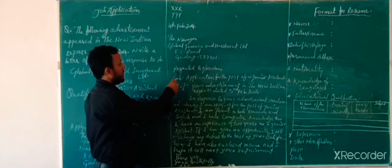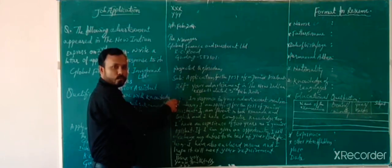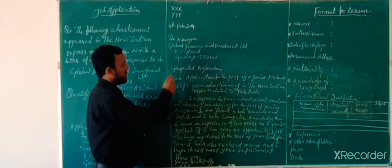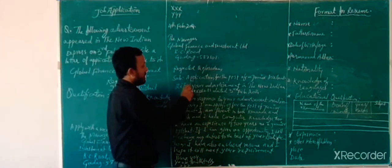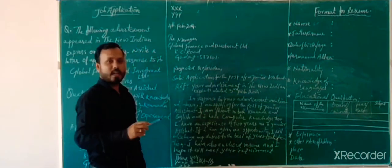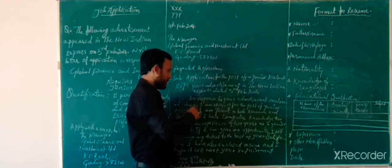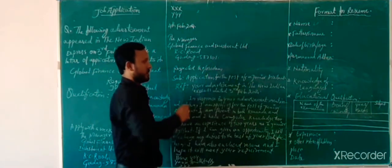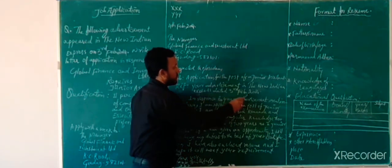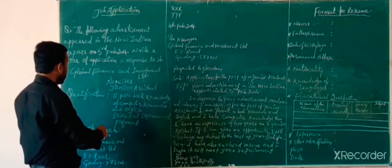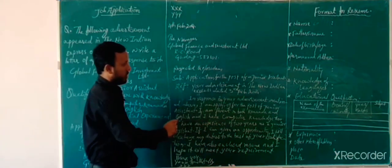Next, write the salutation: 'Respected Sir / Madam,' with a comma. You can write salutation before or after the subject — both are acceptable. The subject is: 'Application for the post of Junior Assistant,' as mentioned in the advertisement. Then give the reference: 'Your advertisement in the New Indian Express dated 3rd February 2014.' You have to give this reference.